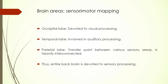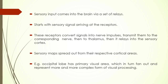Before we get into the experimental data, we will look slightly at the different brain areas and their sensory motor mapping. The main lobes important in terms of sensory motor mapping are the occipital lobe, which is primarily devoted to visual processing, and the temporal lobe, which is for auditory processing. Basically the entire back brain is devoted to sensory processing.